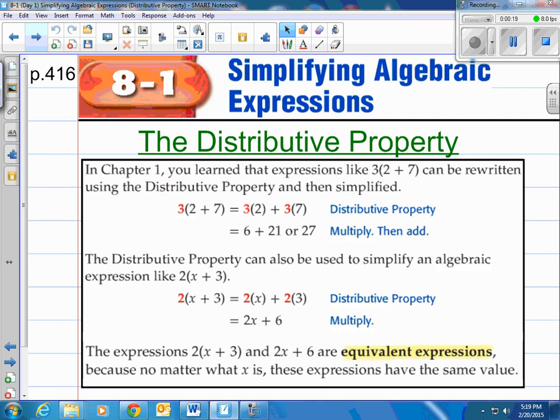Alright, algebraic expressions. We're going to be specifically talking about the distributive property here. In chapter one you learned that expressions like 3 times the quantity of 2 plus 7 can be rewritten using the distributive property and then simplified. Here we have a numeric expression which only includes numbers. Algebraic expressions include numbers and letters, sometimes just letters.